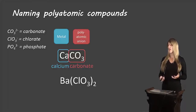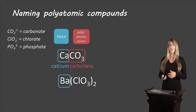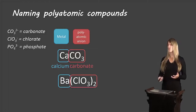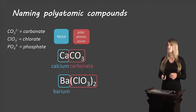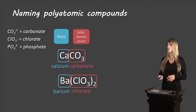Next we have Ba(ClO3)2. Ba is barium, our cation, and ClO3 is chlorate, our polyatomic anion. So we name it barium chlorate, taking the name chlorate directly from the polyatomic list.